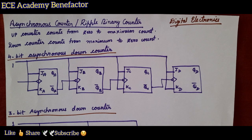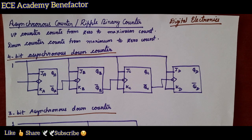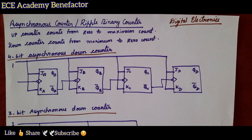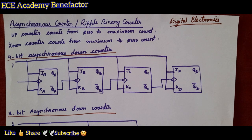It can be called as asynchronous binary counter or ripple binary counter, asynchronous or ripple counter. As we know, asynchronous counters are of three types: up counter, down counter, and up-down counter.